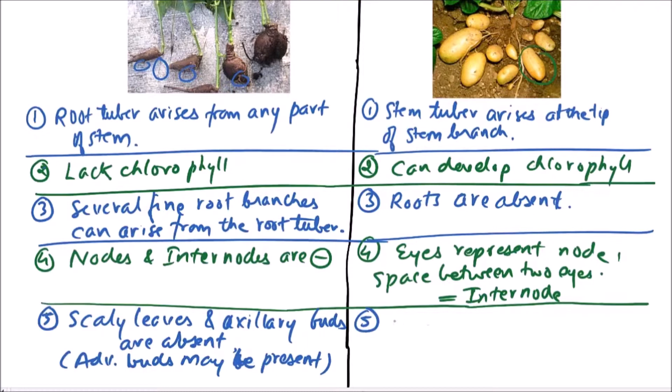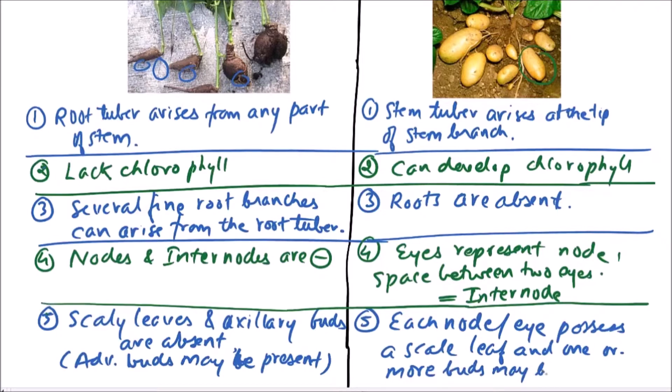But in the case of stem tuber, each node or eye possesses a scale leaf, and one or more buds may be present.